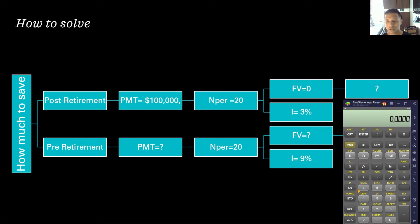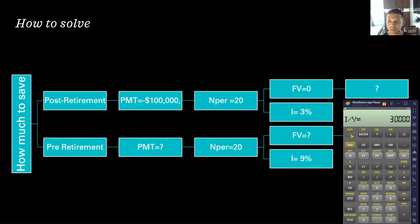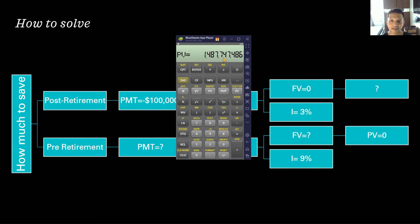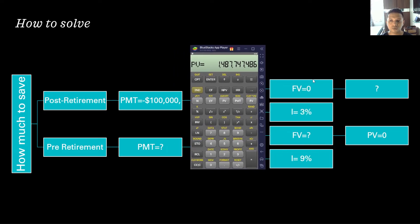Feeding in phase one data: press 20 then N. Enter negative 100,000 and press PMT (negative because it's a withdrawal). Press 0 then FV for future value. Press 3 then I/Y. Now press CPT and PV. The result is approximately 1.487 million dollars — this is the amount we need to have accumulated by retirement, and it becomes the future value for phase two.